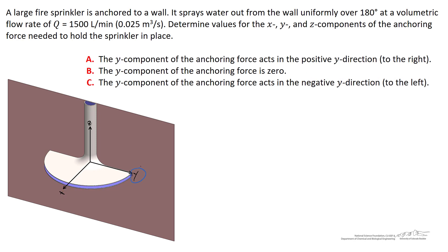The next question is whether there is any y component of anchoring force, and if so, does it act in the negative y direction to the left, or positive y to the right? There is no y component of momentum entering the control volume — it's all in the negative z direction. However, there is a positive y component of momentum leaving on one portion of the sprinkler head, but there's also an equal and opposite component acting in the negative y direction. The net effect is no y component of momentum leaving the control volume, so with none entering and none leaving, the y component of the anchoring force must be zero.